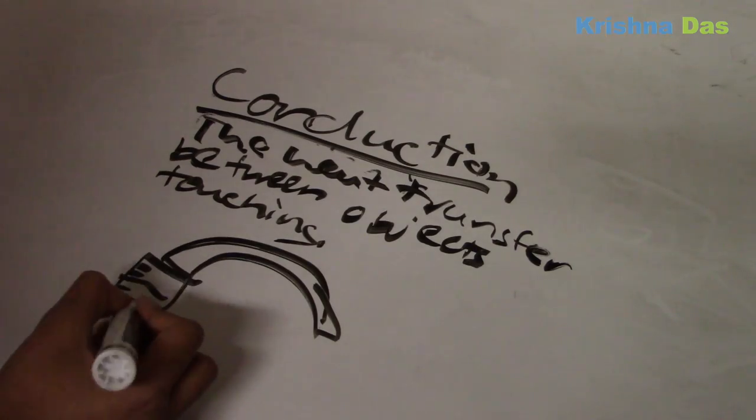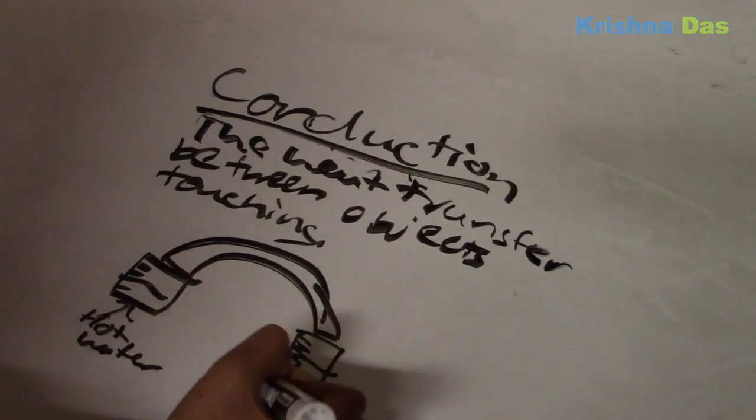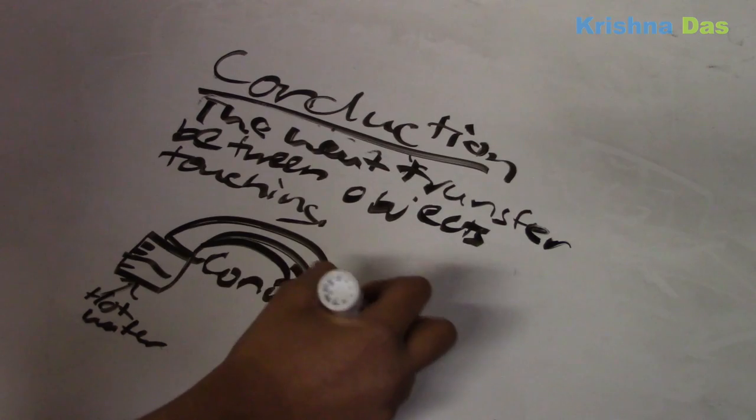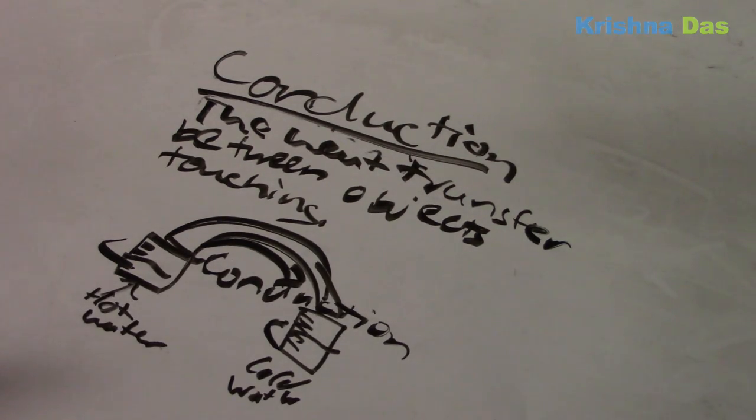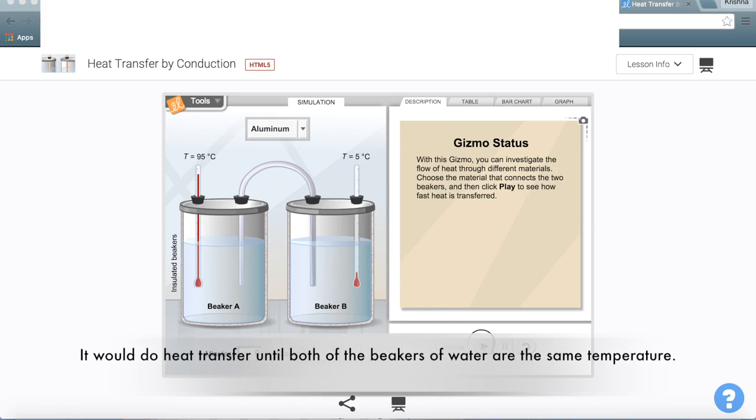Take a tin copper and put hot water and cold water. The hot water would go to cold water until both beakers or cups become at the same temperature.